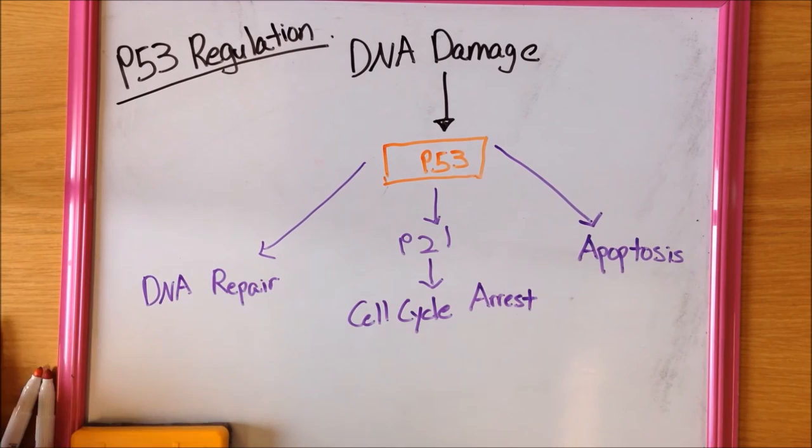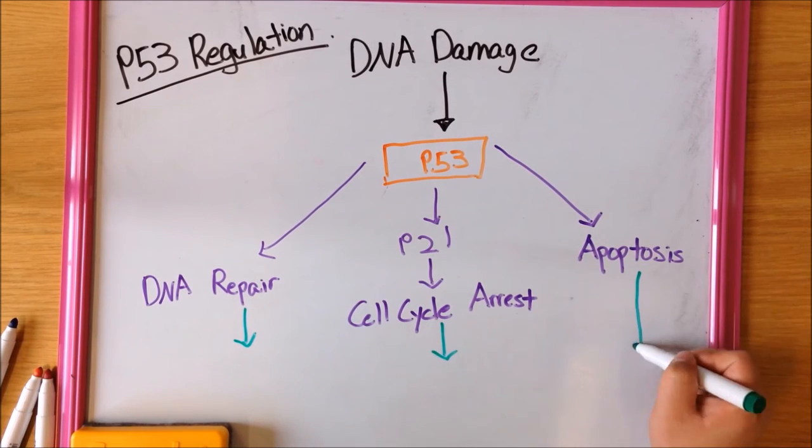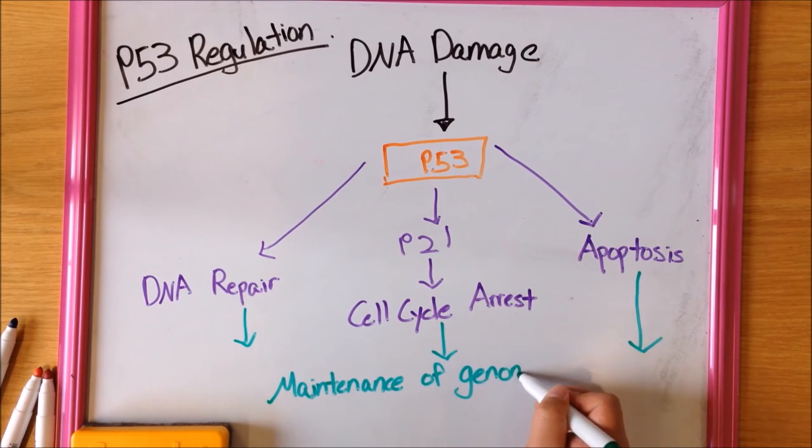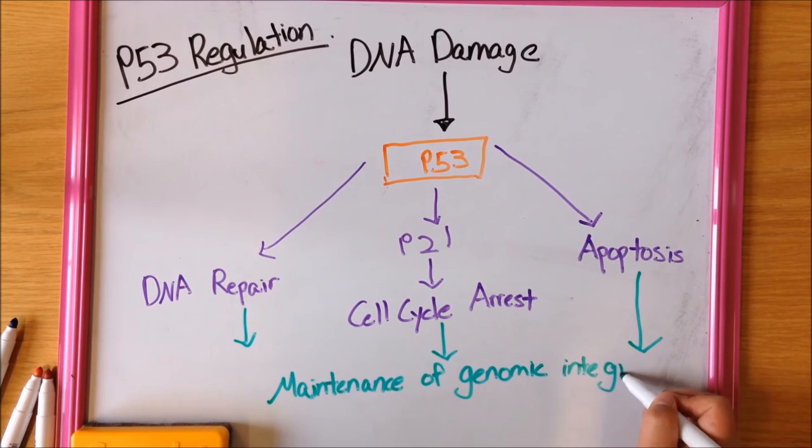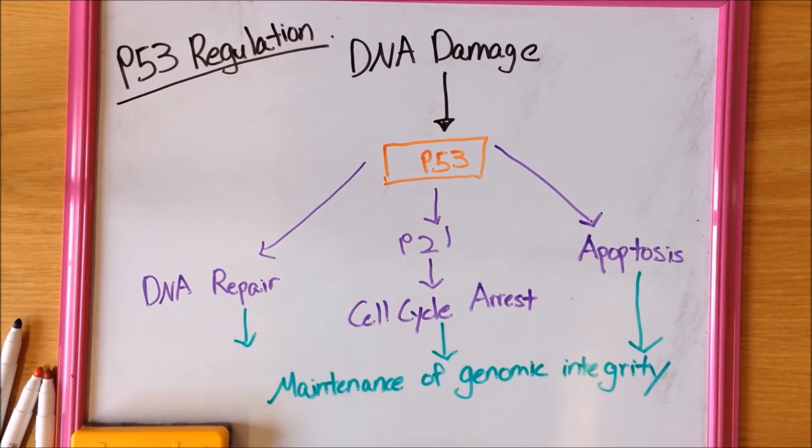Activated P53 binds to DNA and activates genes encoding for a protein called P21. P21 binds to G1S CDK complexes, inhibiting transition into the S phase. In this way, genomic integrity is preserved.